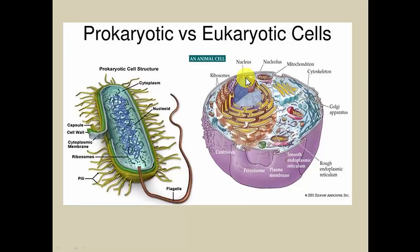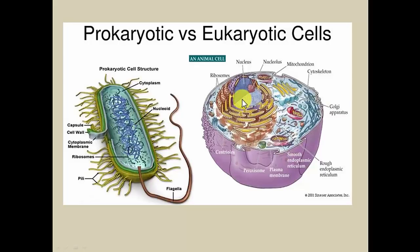The nucleus is a specialized housing unit for the DNA. While both types are considered cells and both have DNA, the way the DNA is organized and the structures surrounding it are quite distinct. In the prokaryote we have a loose aggregation of DNA, while in the eukaryote we have a more advanced apparatus designed to hold the DNA and regulate it on a more advanced level.